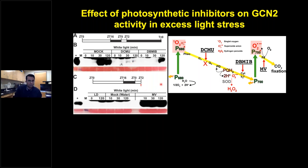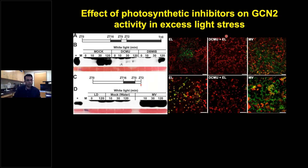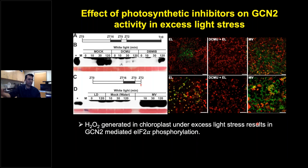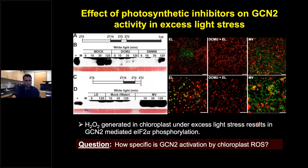In contrast, methyl viologen (paraquat), a potent herbicide that generates massive amounts of superoxide and hydrogen peroxide, activates GCN2 kinase massively within 10 minutes, as shown by eIF2α phosphorylation peaking at that time. Pre-treatment with DCMU suppresses ROS production while methyl viologen massively upregulates it. This nicely demonstrates that hydrogen peroxide generated in the chloroplast under excess light stress is able to activate GCN2 in the cytosol, leading to eIF2α phosphorylation.